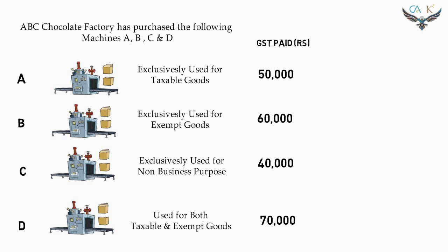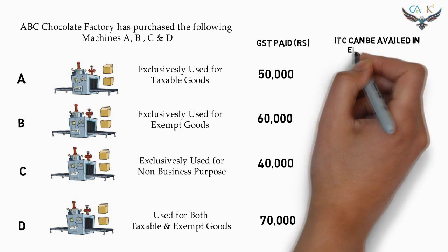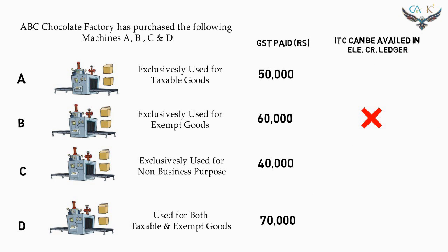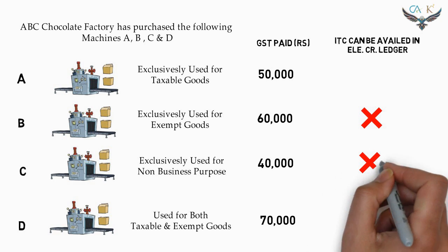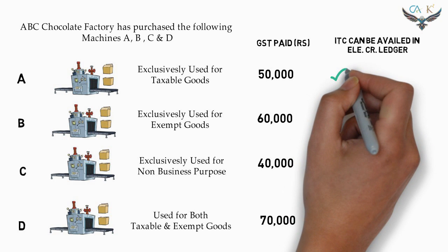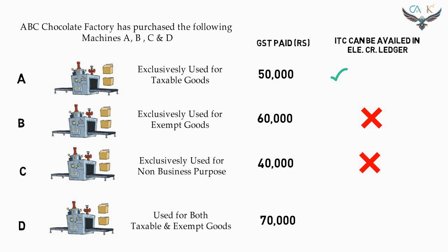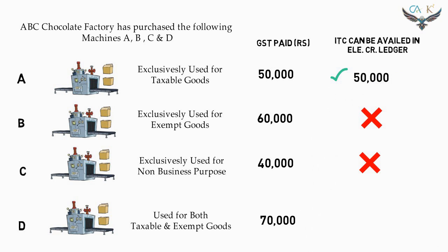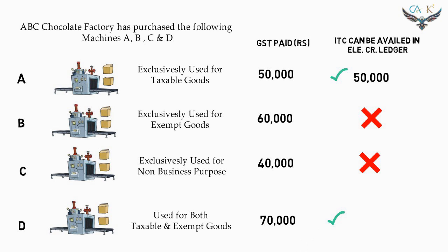Now let us see how much GST that ABC can take as credit on purchasing these four machineries. Since Machine B and Machine C have been used for exempt goods and non-business purpose respectively, the GST paid on such machineries cannot be taken as ITC. On the other hand, since Machine A has been exclusively used for taxable goods, the GST amount of Rs. 50,000 paid can be taken as ITC and credited to the electronic credit ledger. Similarly, Machine D's entire GST amount of Rs. 70,000 can be taken as ITC and credited to the electronic credit ledger.